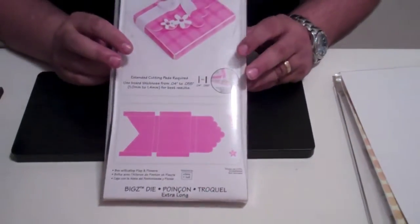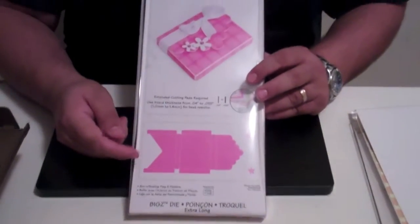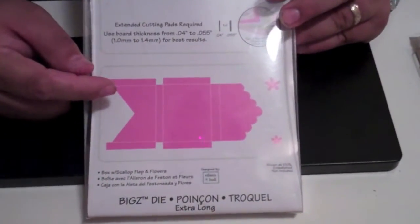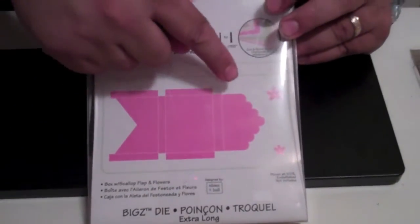The other one that we're using is this one right here. And this is actually the one, the project that we'll be making today. This is the bag with the scallop flap with the flowers.